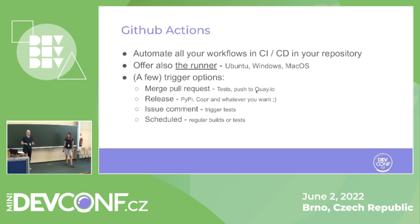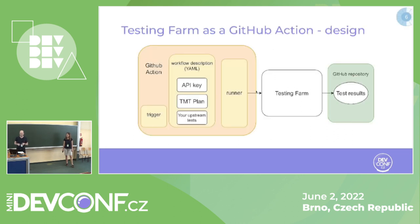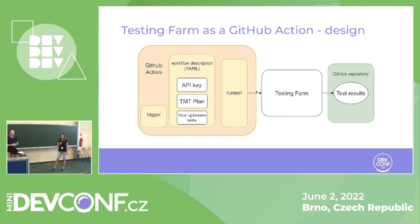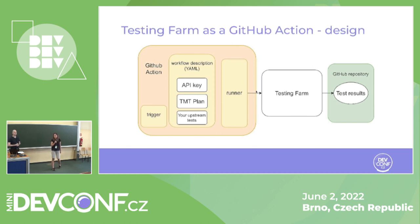That is the aim of GitHub Actions. This is a brief overview. So we talked briefly about Testing Farm and about GitHub Actions. Let's think now about how we can connect them together and how we can design them so we have advantages of both services.